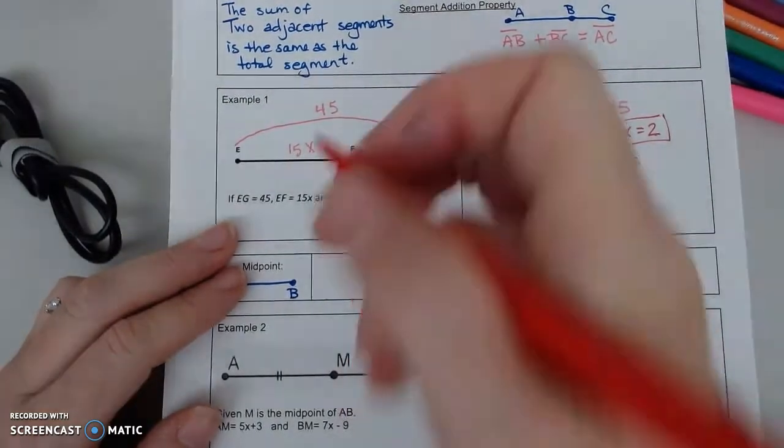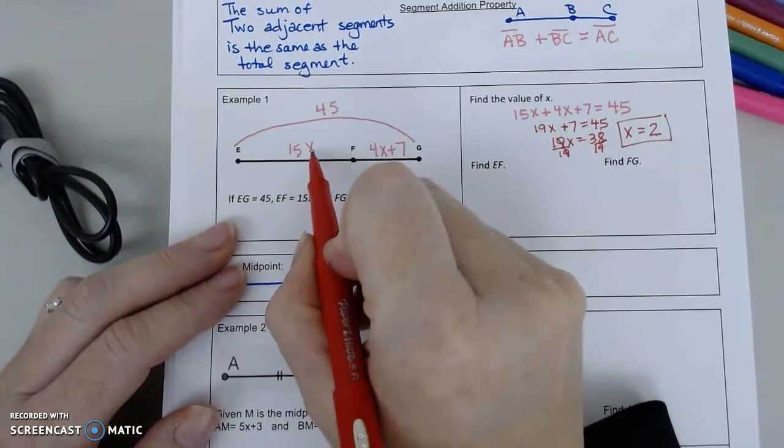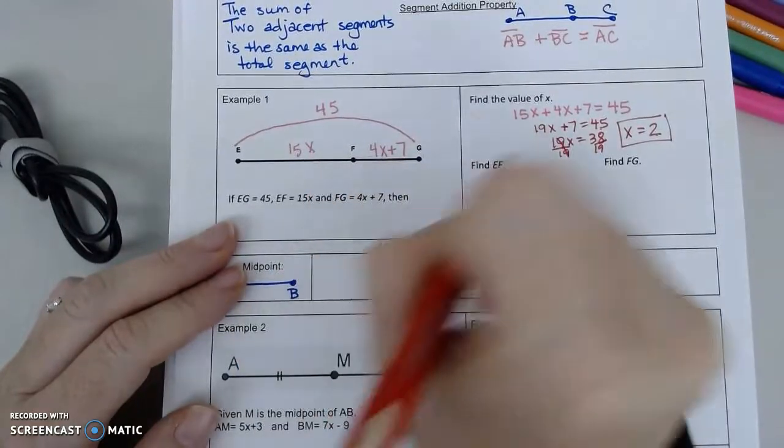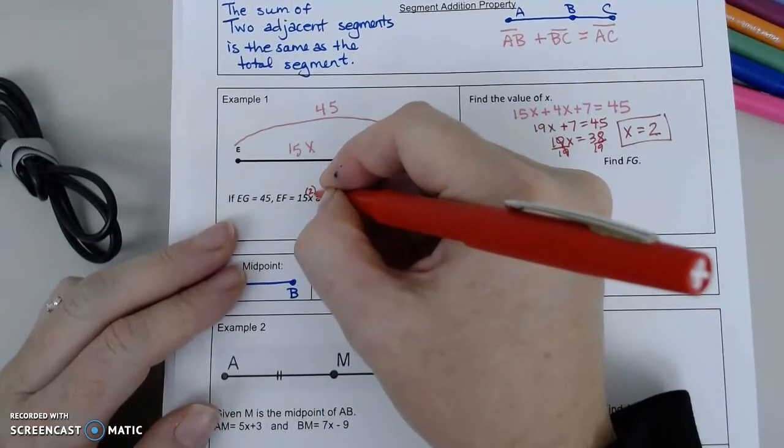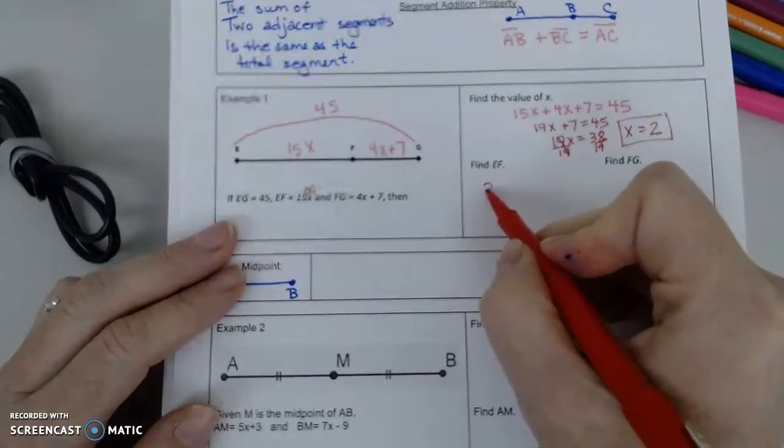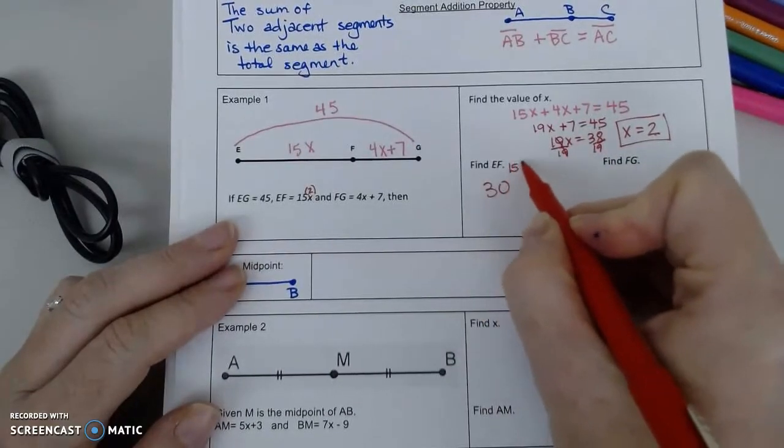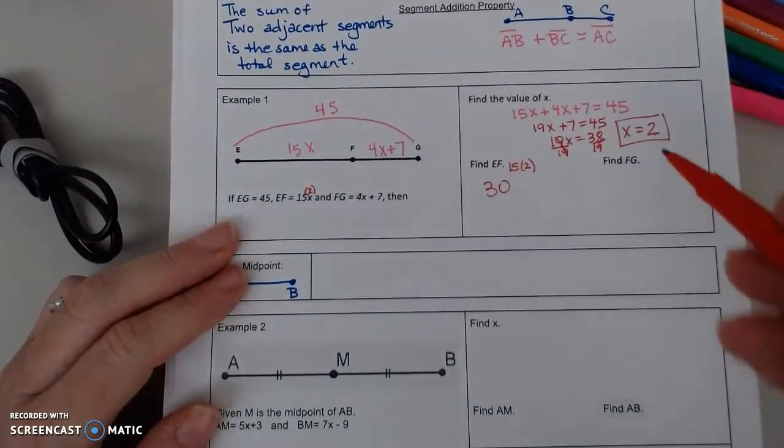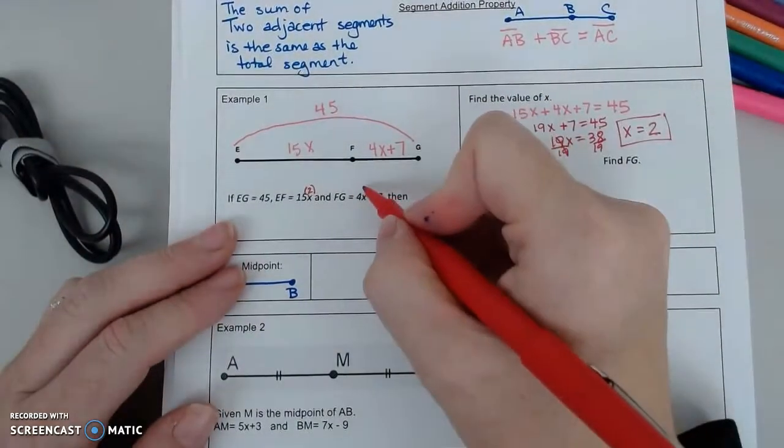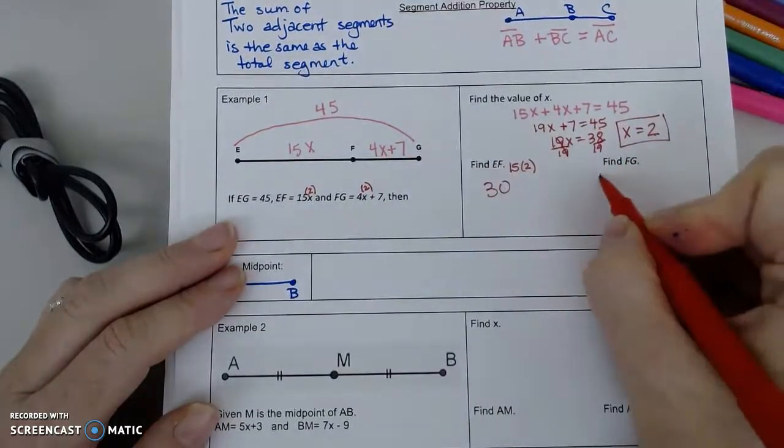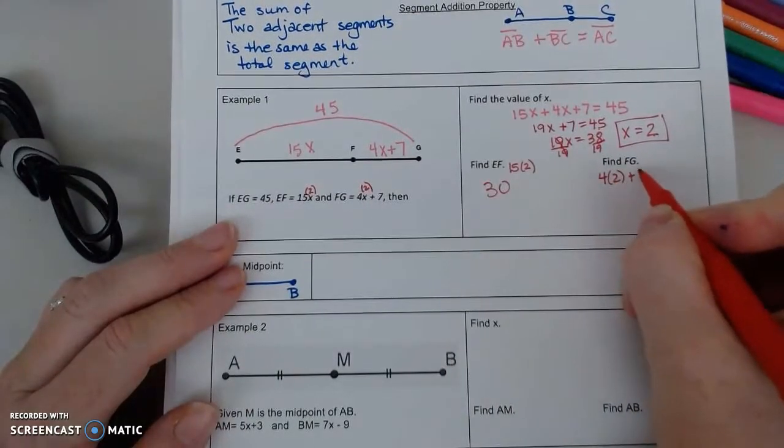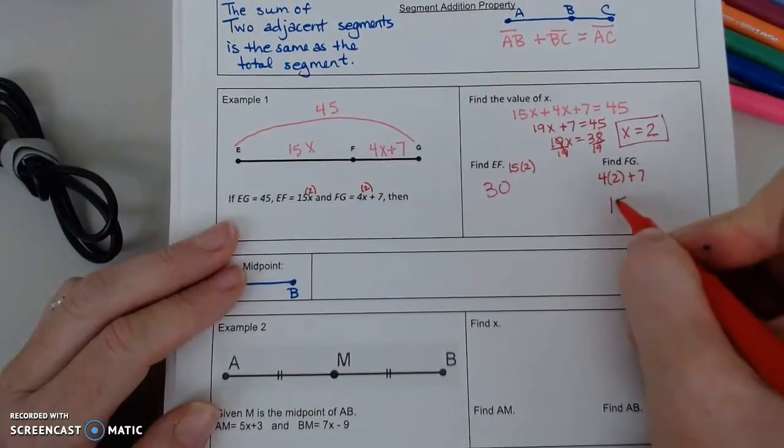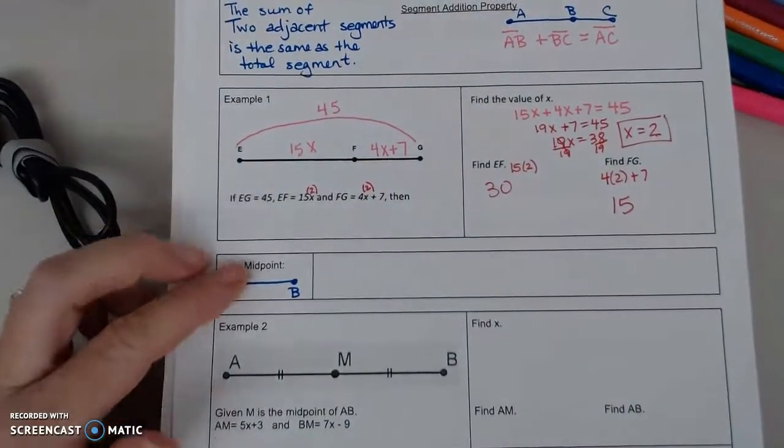For EF, I know E to F is 15X. So if X is equal to 2, I'm going to substitute. So that means that EF is 30. And you can literally show me that would be all the work that I would require. FG, same thing. If X is 2, I've got 4 times 2 plus 7. 8 plus 7 is 15. All right.